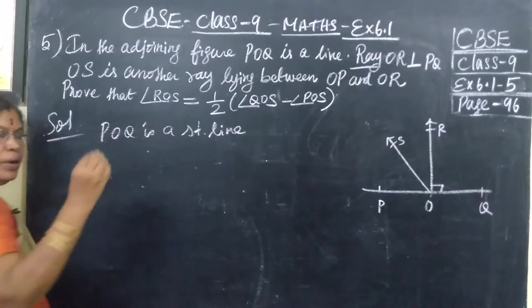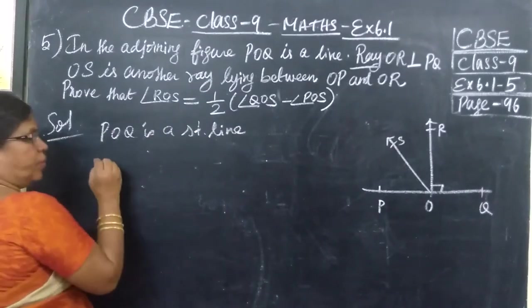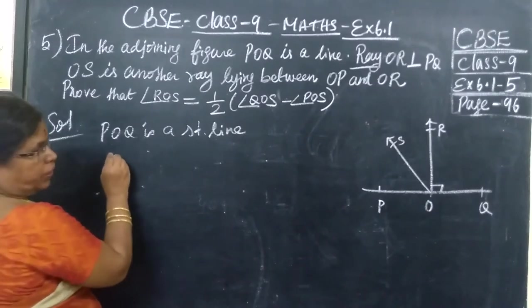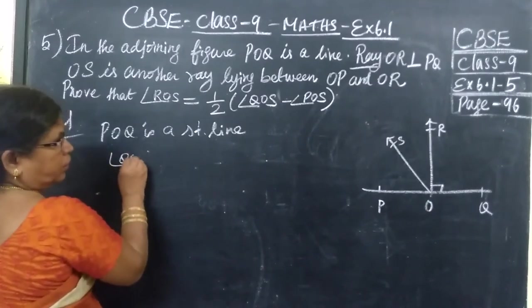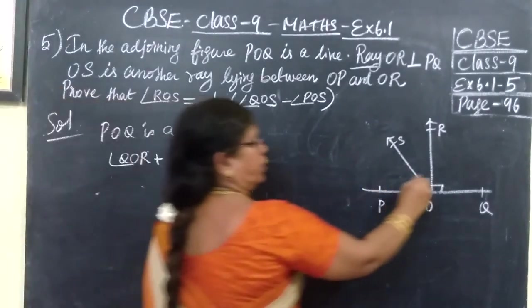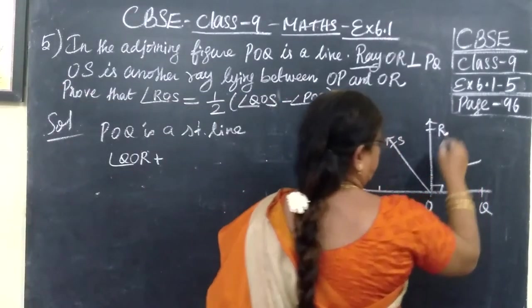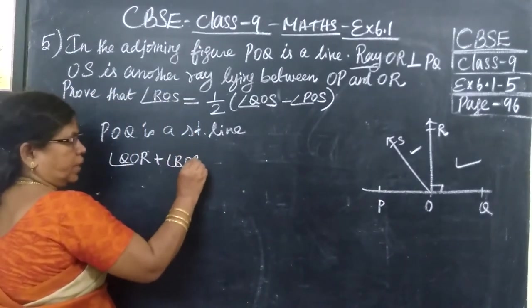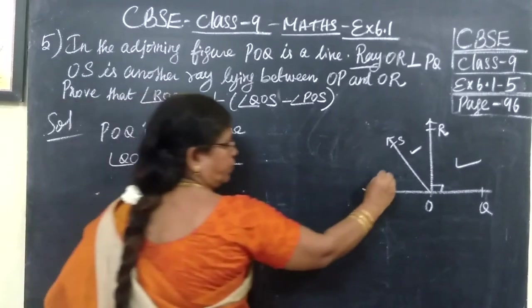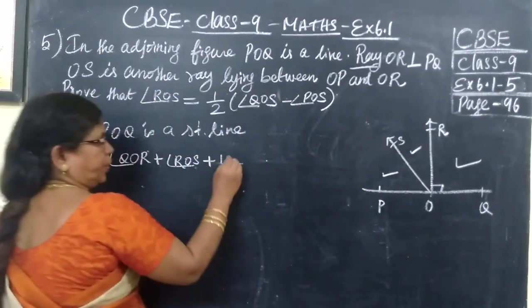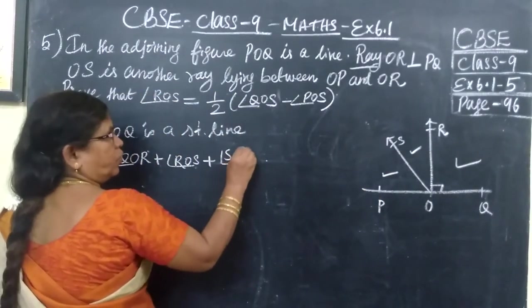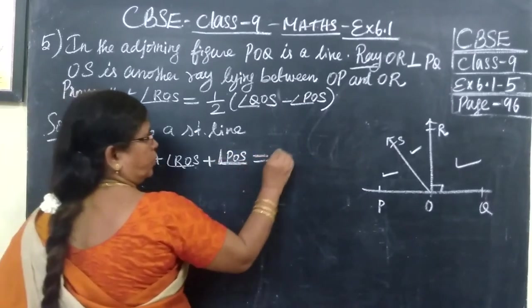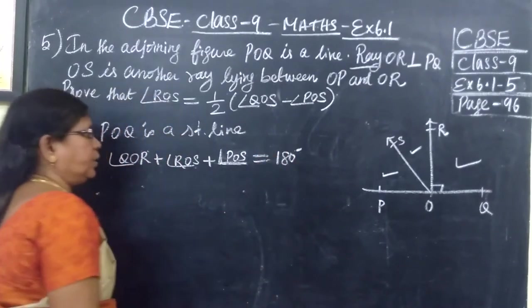Immediately we know the property: sum of adjacent angles equals 180 degrees. So what are the angles? First angle is angle QOR. The next one is angle ROS. Plus the third one, angle SOP or POS. So this is equal to 180 degrees.